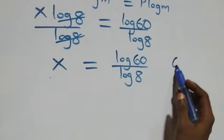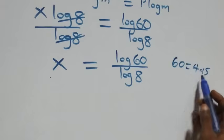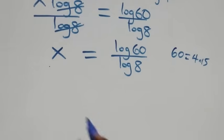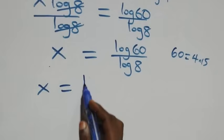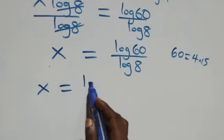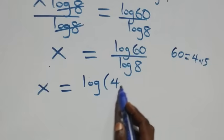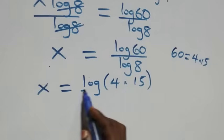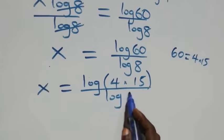The next step, we can express sixty as four times fifteen. This implies all we have here becomes x equals log of four times fifteen, all over log eight.